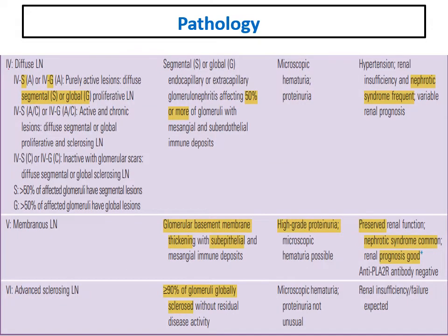Class 4 is diffuse proliferative — endocapillary hypercellularity in more than 50 percent of glomeruli. It can also be divided into active (A), chronic (C), or active and chronic (A/C), and further subdivided into segmental (S) or global (G) affection. Segmental means the affection in each glomerulus involves less than 50 percent of that glomerulus; global means more than 50 percent of the glomerulus is involved.